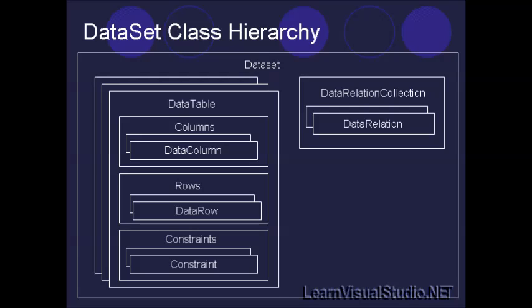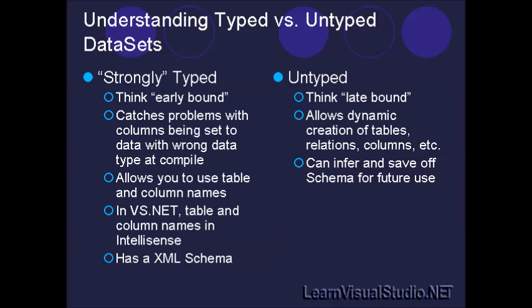I want to talk about the class hierarchy for data sets. A data set contains two major collections: a data table collection and a data relation collection. Data tables contain columns and rows, and there's also a relationship between columns, rows, and constraints, so you can enforce business rules. Data relations connect tables together. As pointed out in the last slide, if you have tables from different data sources, you can enforce referential integrity between those two data tables through the use of a data relation object.